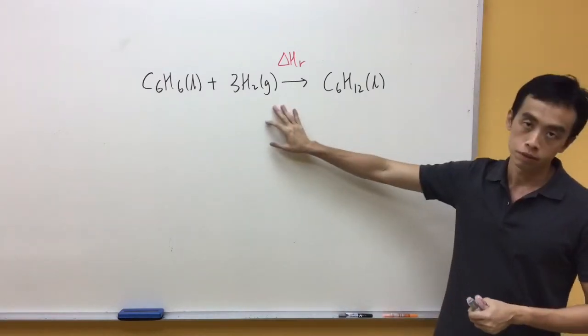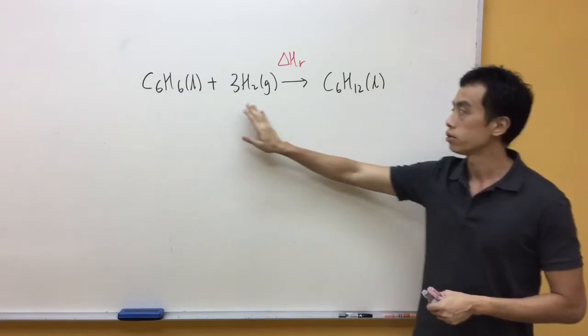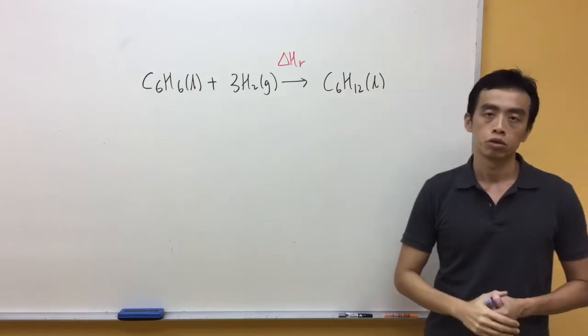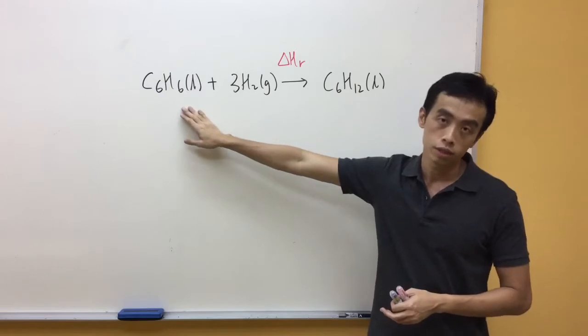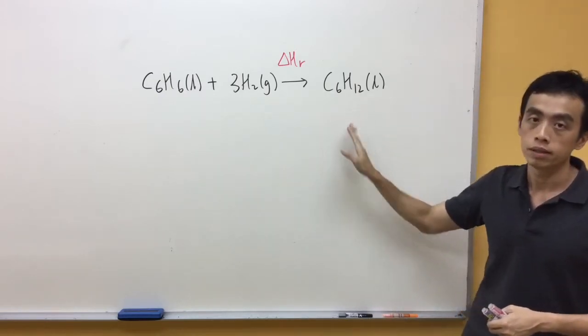In this case, we have an example. This equation is C6H6 plus 3H2 to give us C6H12. I'm given the entropy change of combustion of C6H6, the combustion of hydrogen, as well as the combustion of C6H12.